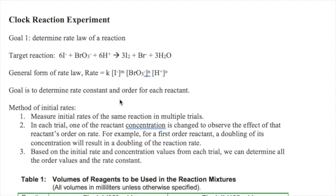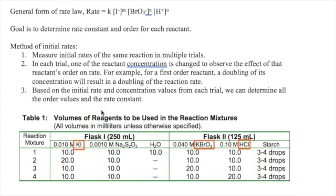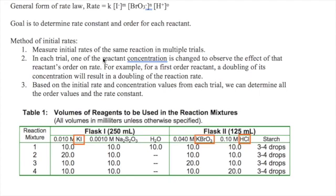As we learn in lecture, one way to calculate these values is by using the method of initial rates. Recall that this means we must do the following. One, we must measure the initial rates for the target reaction in multiple trials.